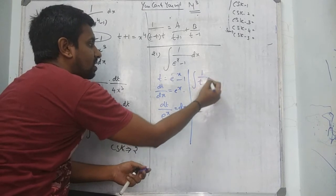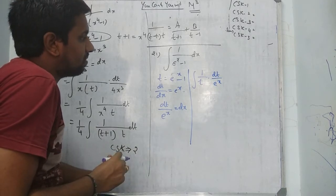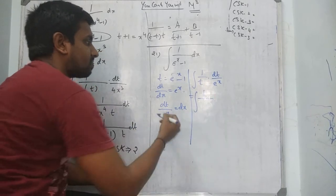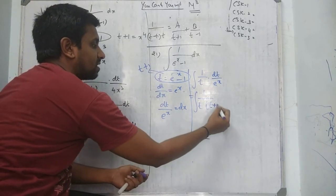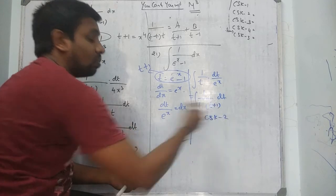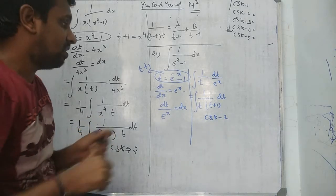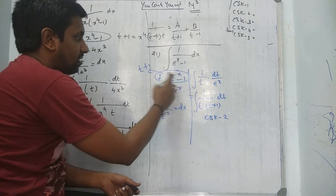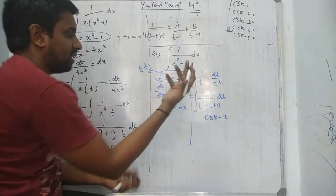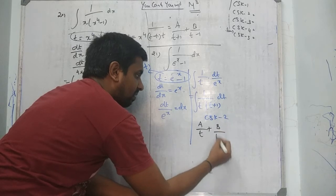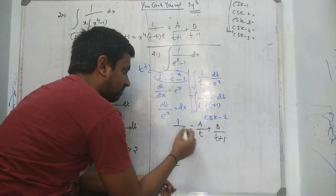So we get 1 over t, and dx equals dt over eˣ. In place of eˣ substitute t + 1. So the integral becomes 1 over t(t + 1) dt — this is CSK2. Write A over t plus B over (t + 1).